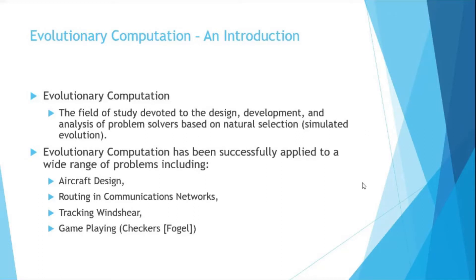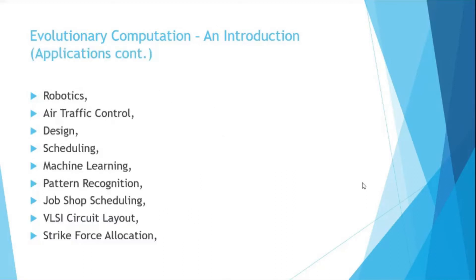Evolutionary computation is a simulated evolution condition. Some application areas include aircraft design, routing in communication networks, electronic field applications, tracking wind shear, game playing — for example, the game checkers, where an evolutionary computation procedure was employed — and robotics, which involves path finding or motion planning to minimize total distance covered or maximize area covered.